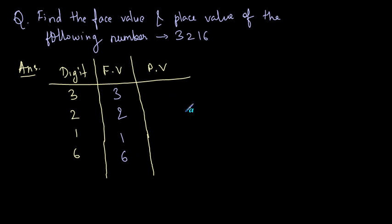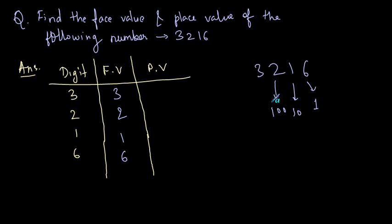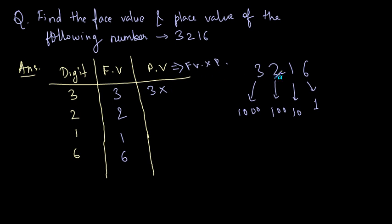Now we have to calculate the place value. Let's write the number 3216 and find the place of each digit: 6 is in the 1s place, 1 is in the 10s place, 2 is in the 100s place, and 3 is in the 1000s place. Remember the formula: place value = face value × place. So the place value of digit 3 is its face value (3) multiplied by its place (1000), which equals 3000.